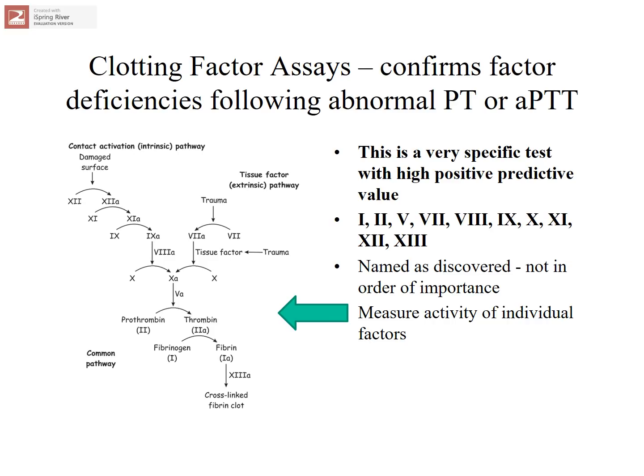We also have specific clotting factor assays. The PT and APTT are global tests — they measure multiple factors at the same time. Clotting factor assays are used to follow up on abnormal global tests. They measure the activity of specific individual factors and have a very high positive predictive value, meaning if this test is abnormal, we can feel confident that the individual has an abnormality with a specific clotting factor. These factors are named with Roman numerals — they were named as they were discovered, not in their order of importance, which is why the coagulation cascade is difficult to learn.